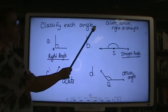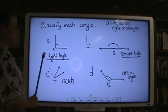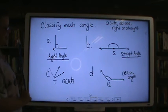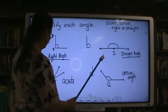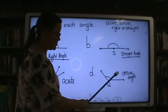Classify each angle whether it's acute, obtuse, right, or straight. A is the right angle. B is the straight angle. C is the acute angle. And D is the obtuse angle.